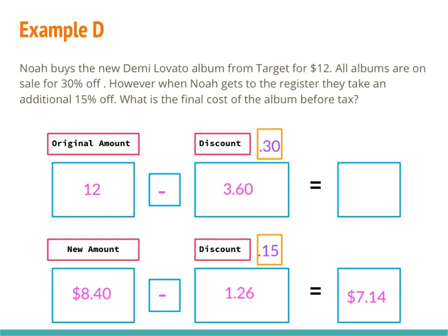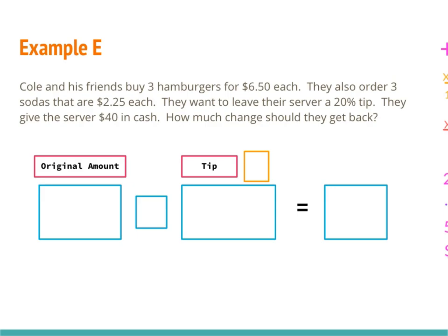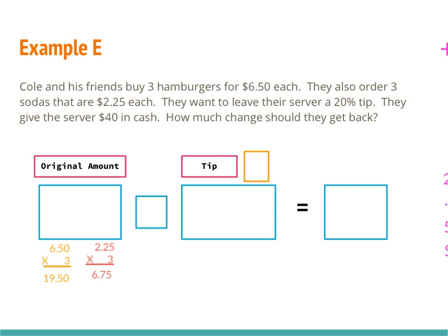In example E: Cole and his friends buy three hamburgers at $6.50 each and three sodas at $2.25 each. They want to leave their server a 20% tip and give the server $40 cash. How much change should they get back? Three hamburgers: $6.50 times 3 equals $19.50. Three sodas: $2.25 times 3 equals $6.75. Adding those together gives an original amount of $26.25.